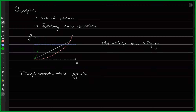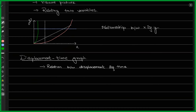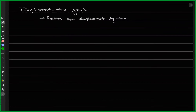We'll now continue with the next topic: the displacement-time graph. We discussed graphs in quite detail last time, so let's move on to the application of these graphs in physics. The first one is the displacement-time graph. As the name suggests, it gives you a relation between displacement and time — how displacement of the object changes as time passes.